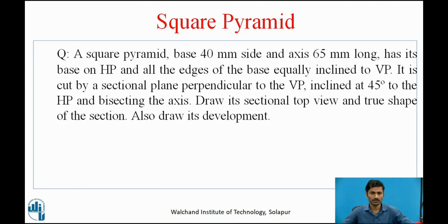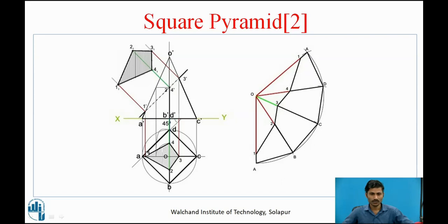For this question, the square pyramid is resting on HP. We need to draw one XY line. The plane above the XY line is called the vertical plane, and below is the horizontal plane. Since the base surface is resting on HP, from the top view we see the square surface of the base with its true shape. We need to draw a square in the top view with edges AB, BC, CD, and AD, all equally inclined to VP.